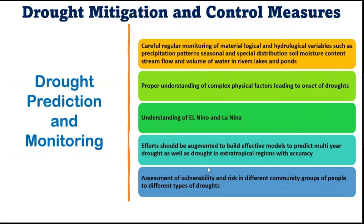For mitigation and control of droughts, since the immediate negative impacts are on humans, efforts should be made to understand the correlation between different types of droughts and mortality in order to initiate effective measures. The United Nations Development Program developed a mortality drought risk model in 2004, but due to certain reasons this model was not fully successful.